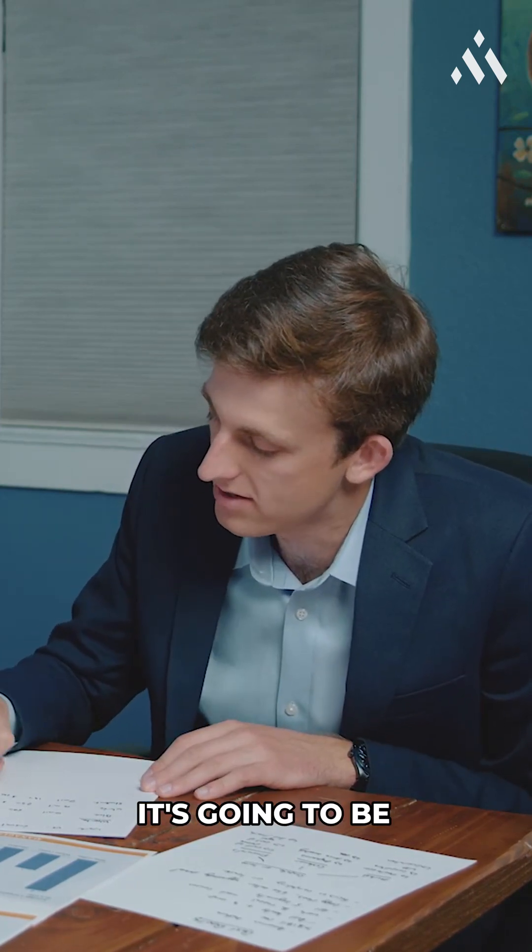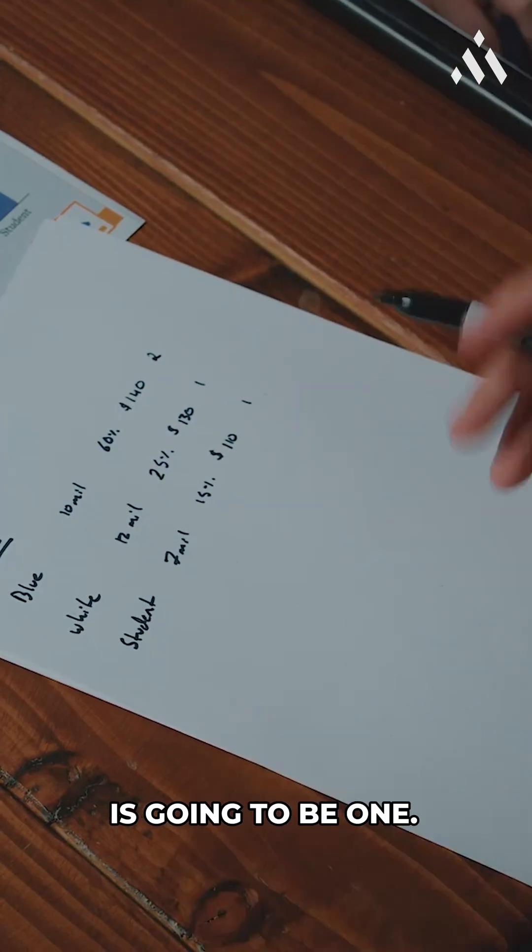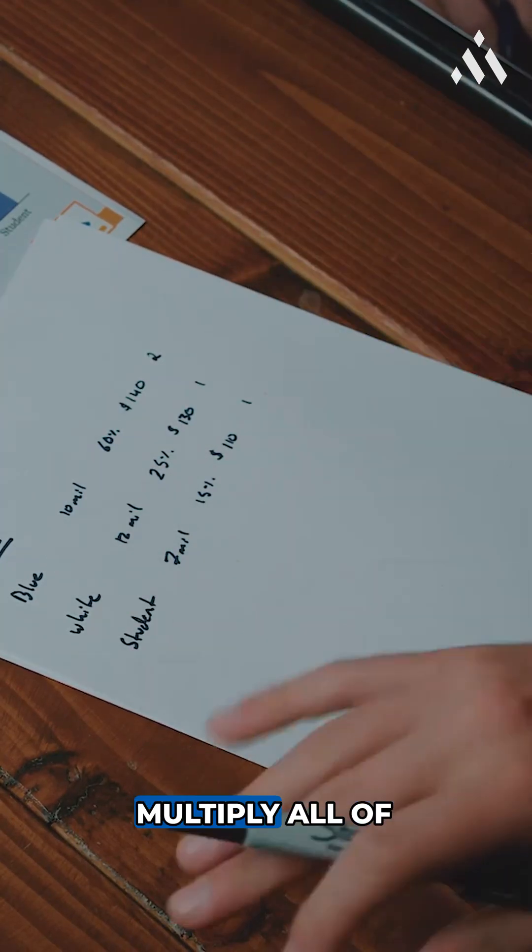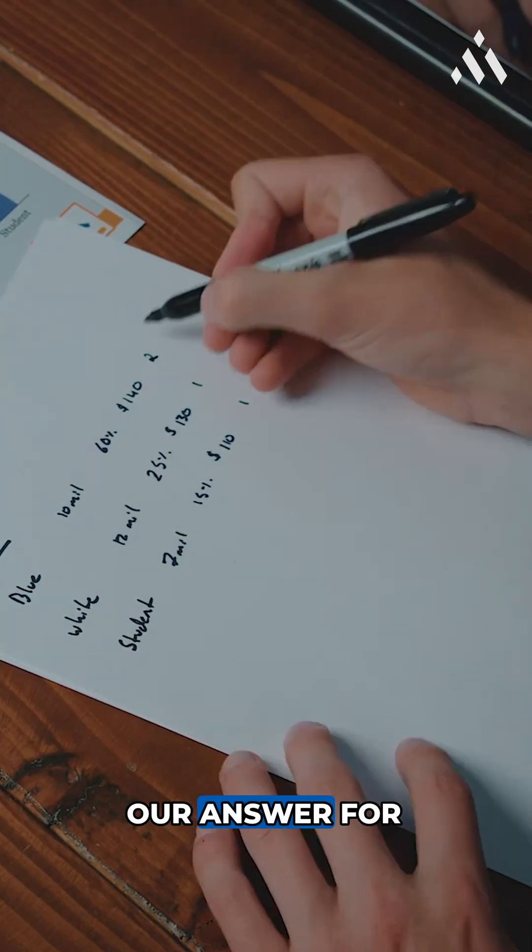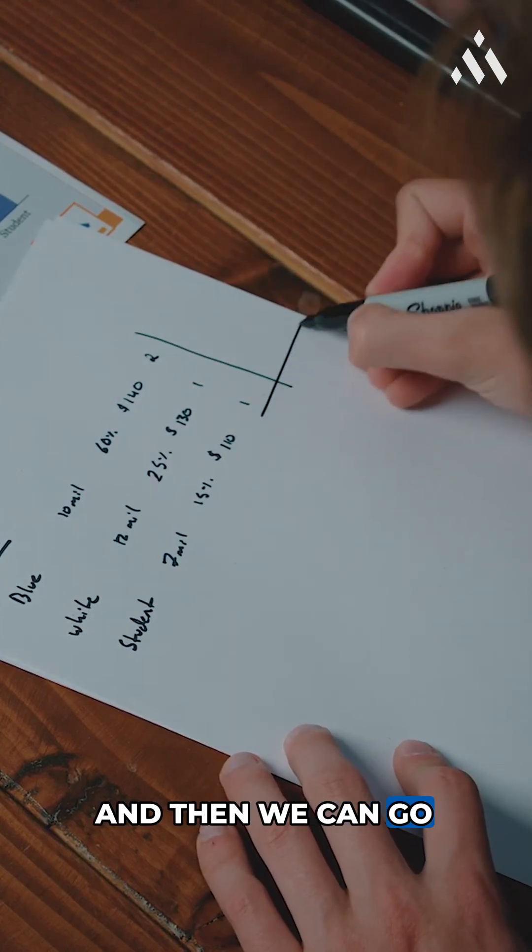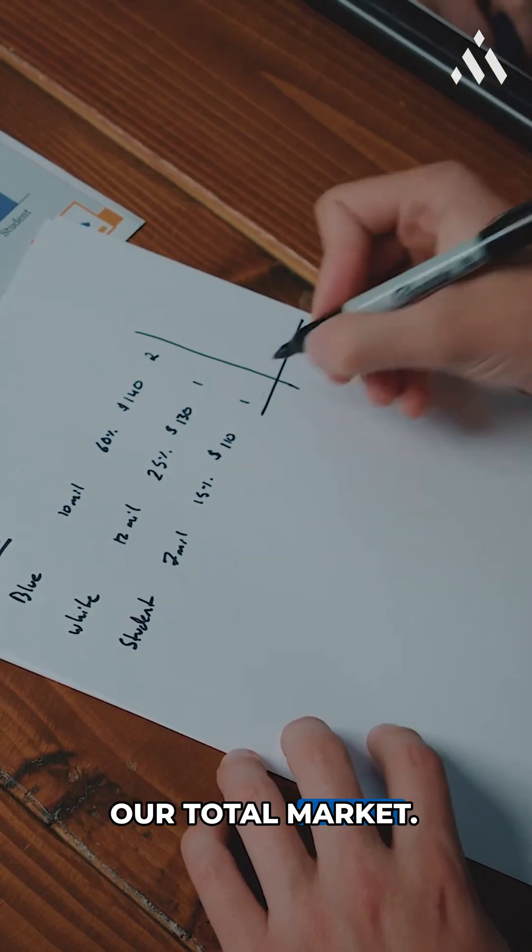So for blue collar, it's going to be two. And the others, it's going to be one. So now I'm just going to chain multiply all of them and then get our answer for that. And then we can go ahead and add it up in the bottom for our total market.